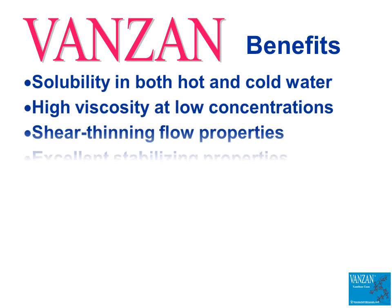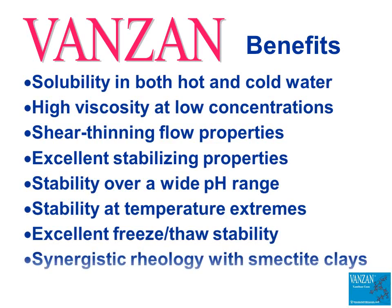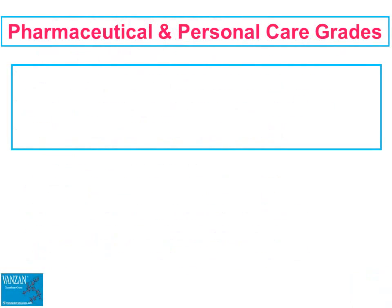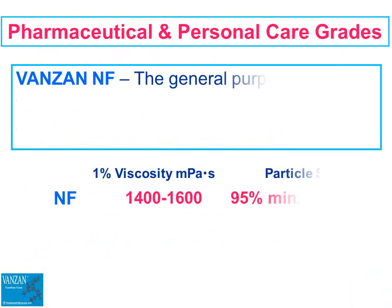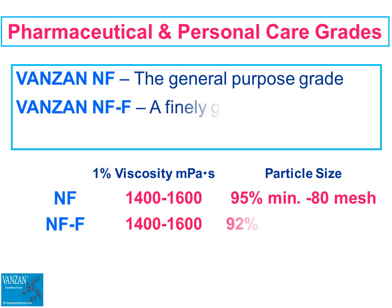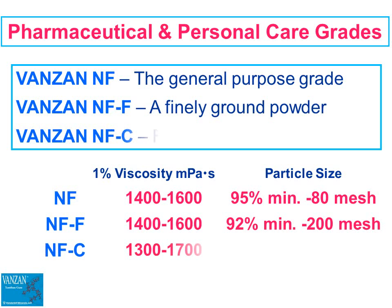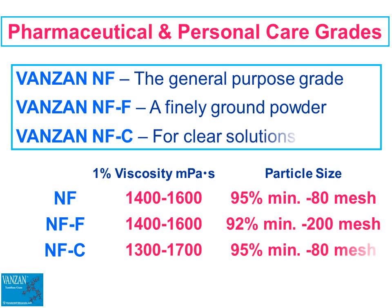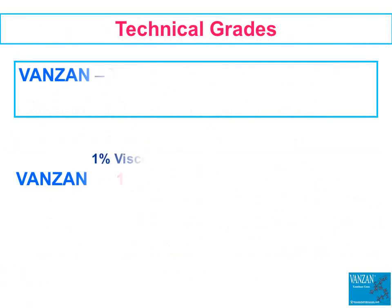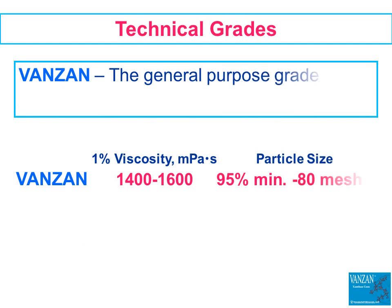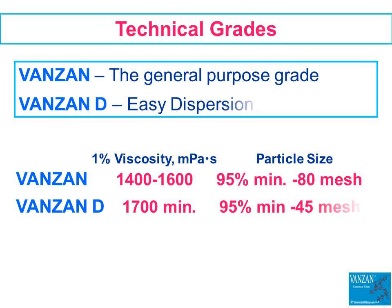Vanzan xanthan gum provides a combination of benefits unique among the rheology control additives used in water-based formulations. Vanzan NF is the general-purpose grade suitable for most pharmaceutical and personal care applications. Vanzan NFC produces clear xanthan gum solutions for applications where product clarity is essential, such as syrups and gels. All pharmaceutical and personal care grades of Vanzan conform to the xanthan gum NF monograph. Vanzan is also a general-purpose grade suitable for most household, institutional, and industrial applications. Vanzan D provides easy dispersion with rapid viscosity development without the formation of lumps or fish eyes.